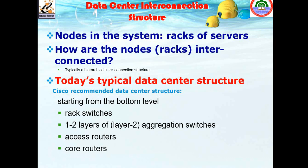Considering the data center interconnection structure: racks of servers, with several racks each containing a set of servers, are interconnected. Usually we use hierarchical interconnection structures. Cisco's recommended data center structure starts from the bottom level — rack switches, then one or two layers of aggregation switches, Layer 2 switches, access routers, and core routers, building from the bottom to the top.